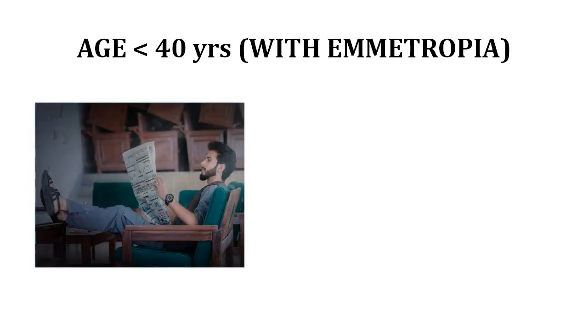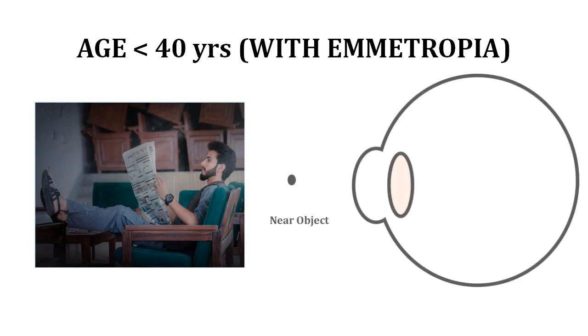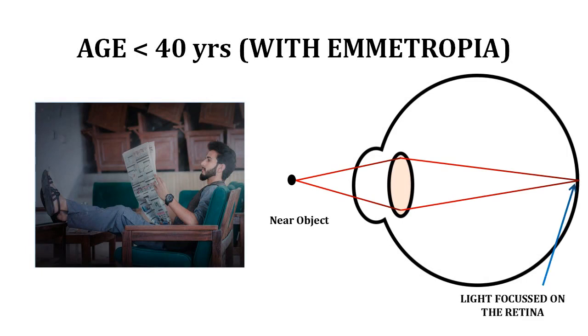When a person is young, by young I mean less than 40 years of age, his near vision is good. He does not need glasses for reading because the natural lens has good accommodative power, which means that it can focus light on the retina by changing its shape and curvature and this mechanism is known as accommodation.